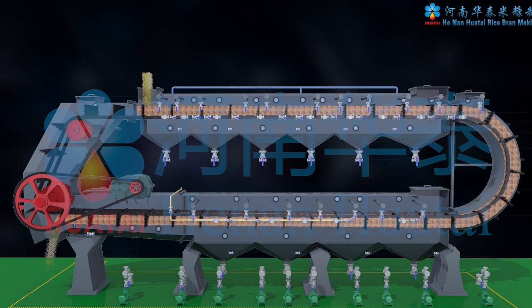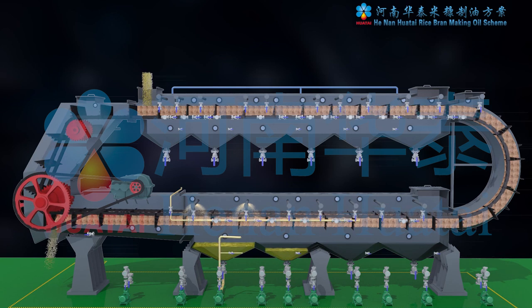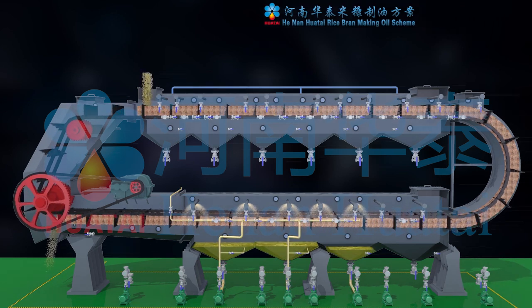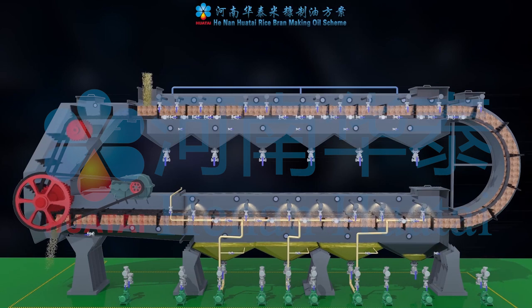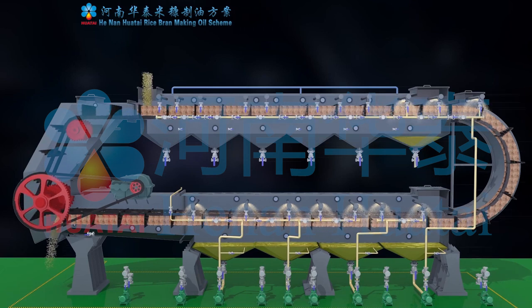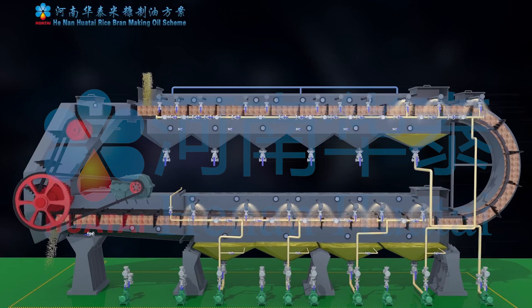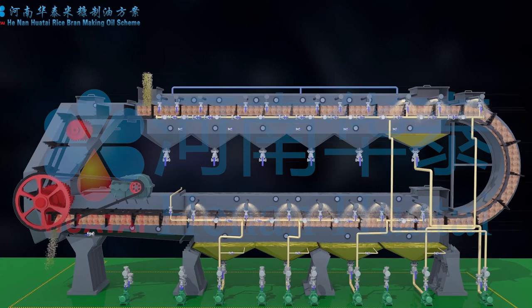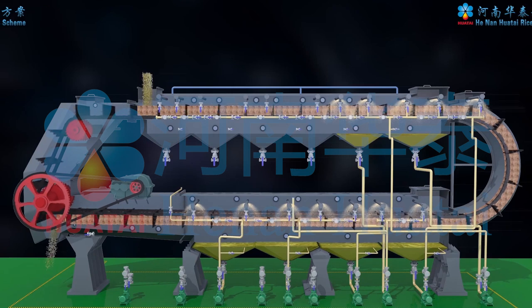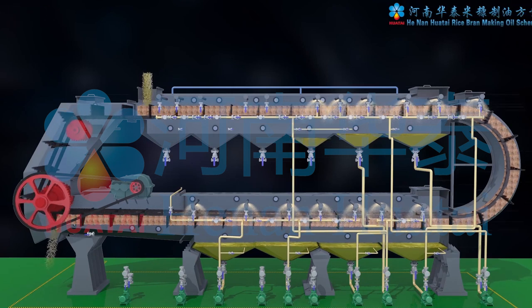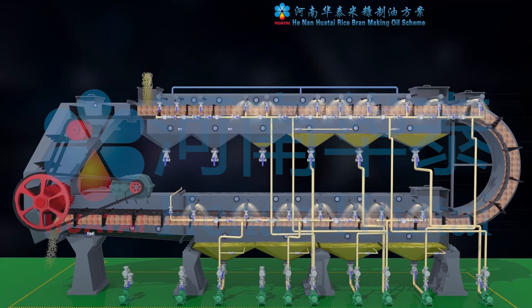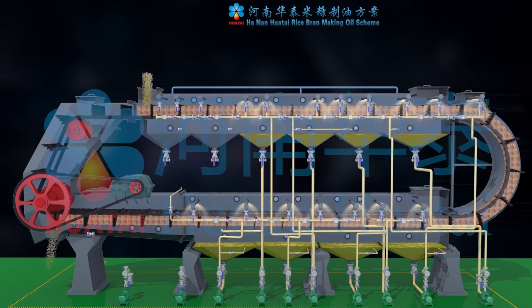High purity solvent is sprayed into the Rotocel Extractor by the first stage spray system. Sprayed material enters the drip dry section of the extractor. The low concentrated mixed oil at the bottom of the first frame is pumped by No. 1 Solvent Pump and sprayed to the top of material in the second frame, and so on. Low concentration mixed oil is sprayed circularly. The oil concentration of the solvent decreases and the mixed oil purity increases. High concentration mixed oil is drawn from the bottom of the second frame at the top of the extractor.